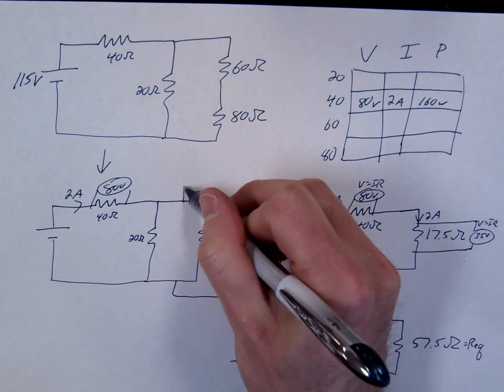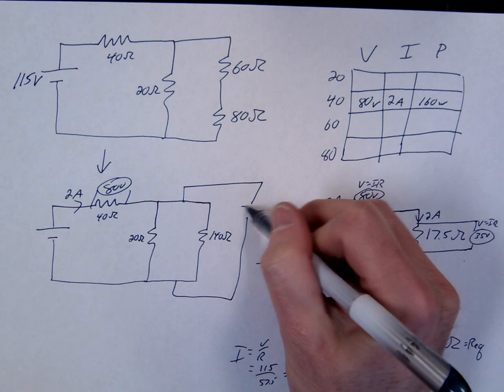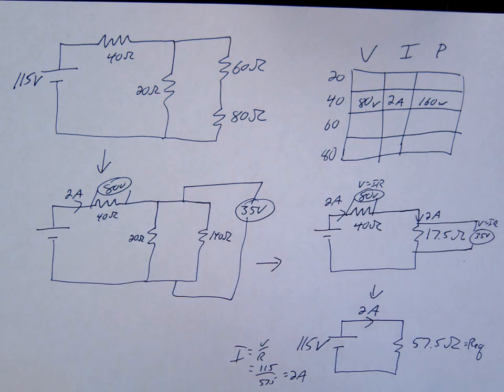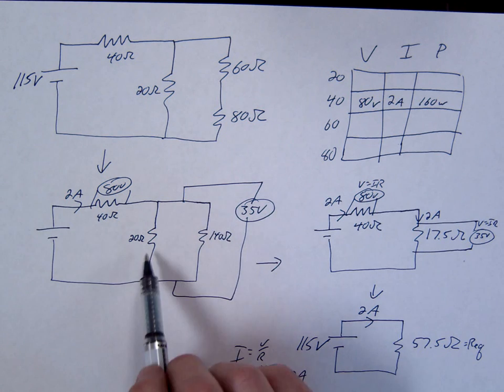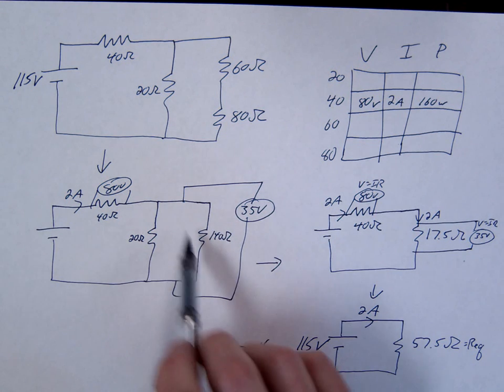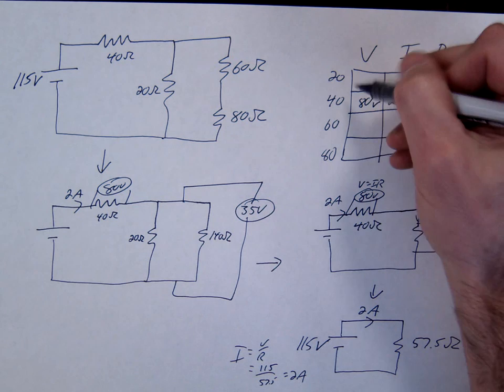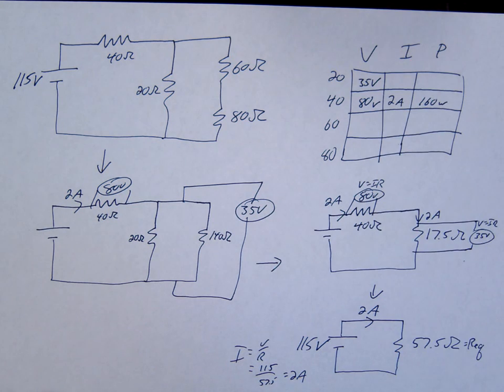Remember, these were in parallel, so they get one voltage. So that's 35 volts across there. Were either of these one of my originals? The 20 ohm was one of my originals. So I could fill that in. So that's 35 volts right there.